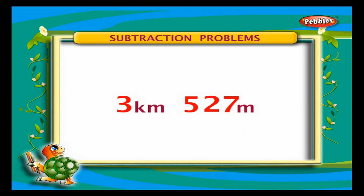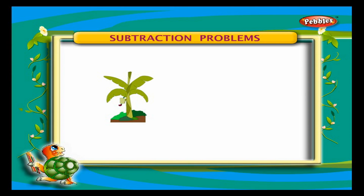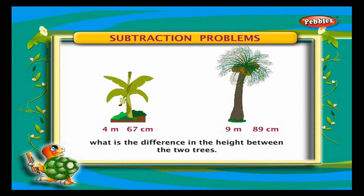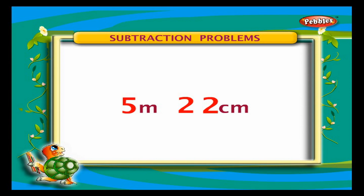Problem 2: The height of a banana tree is 4 meters and 67 centimeters, and the height of a coconut tree is 9 meters and 89 centimeters. What is the difference in height between the two trees? Arrange the numbers in columns. Subtracting ones — we get 2. Subtracting tens — we get 2. Subtracting hundreds — we get 5. The difference in height between the two trees is 5 meters and 22 centimeters.